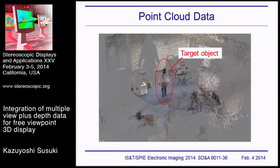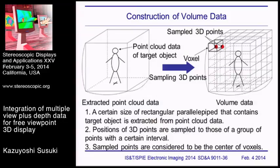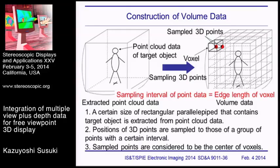This is an example of integrated point cloud data with the target object in the center. Next, volume data is constructed from discrete point cloud data. A rectangular parallelepiped region containing the target object is extracted from the point cloud. Then, positions of 3D points are sampled at a certain interval, and sampled points are considered to be the centers of voxels. The red circle marks a sampled 3D point at the center of a voxel, and the sampling interval equals the edge length of each voxel.